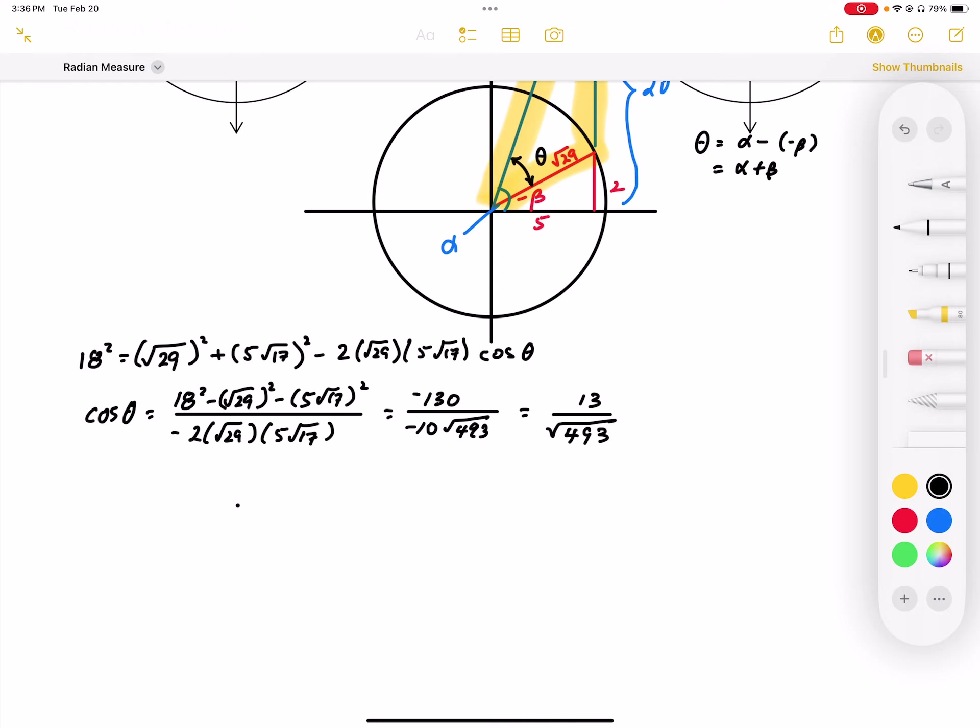So we can then draw our picture for cosine theta, and through that we can find cosine theta. So in our standard position circle, we have cosine theta, which is going to be 13 over root 493.